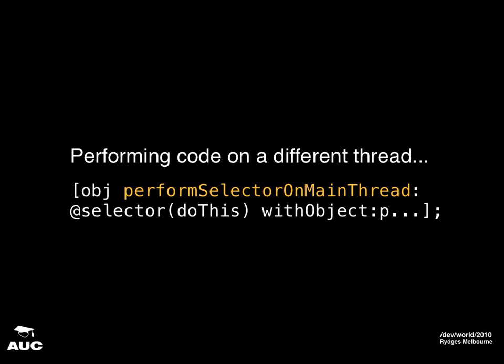To give a couple of examples: performing code on a different thread. How do we do this? In Cocoa, we use performSelectorOnMainThread. We can pass any selector and give it any parameter we want and do this on any object. The problem is our selector has to be implemented as a method, and the method's implementation is going to appear somewhere else — not right next to where we're invoking it.